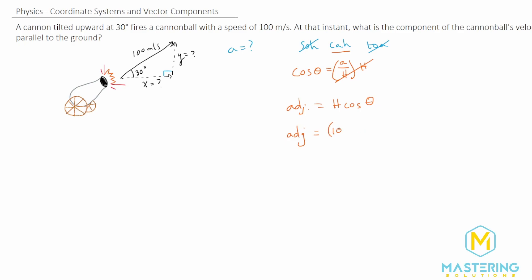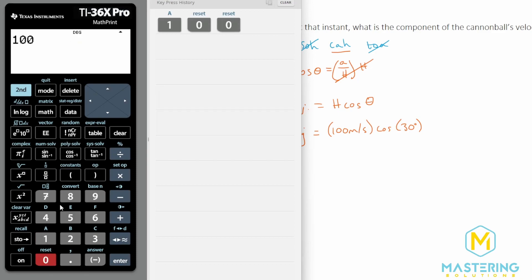So the adjacent will be equal to 100 meters per second times the cosine of the angle 30 degrees. So 100 times the cosine of 30 gives us 50 square root 3. Let's do the approximate answer which gives us 86.6, we'll round that to 87 and that is 87 meters per second.